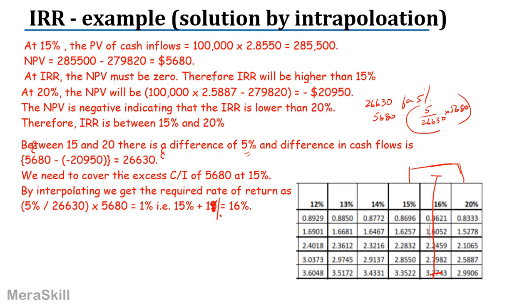Note that the shorter the gap between the two rates used, the more accurate the answer you get. When you have equal annual cash flows, you don't need to do the interpolation — it is better to just find the PVIFA and proceed. But this interpolation method is important to understand because when there are unequal cash flows, you have to use interpolation.